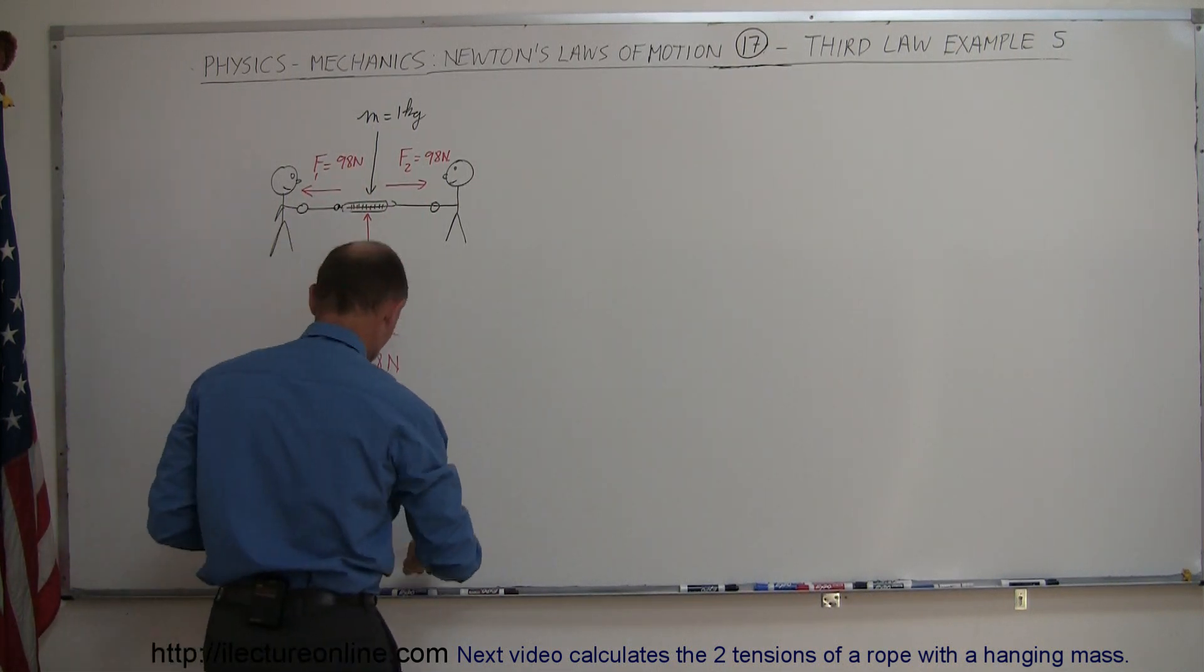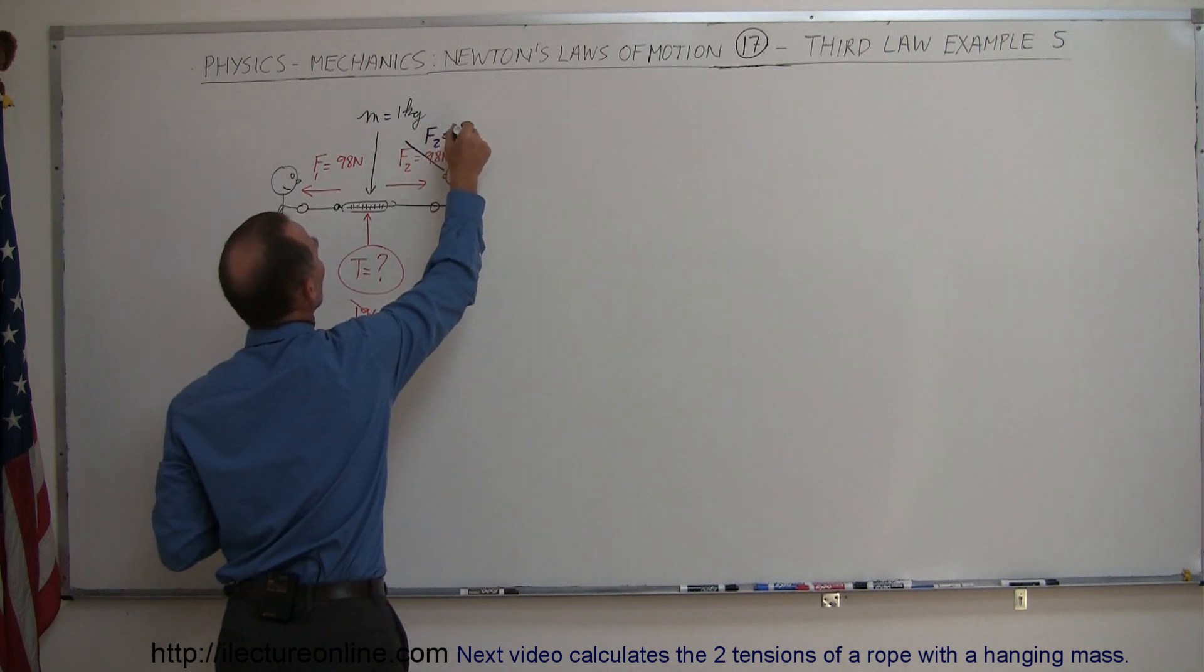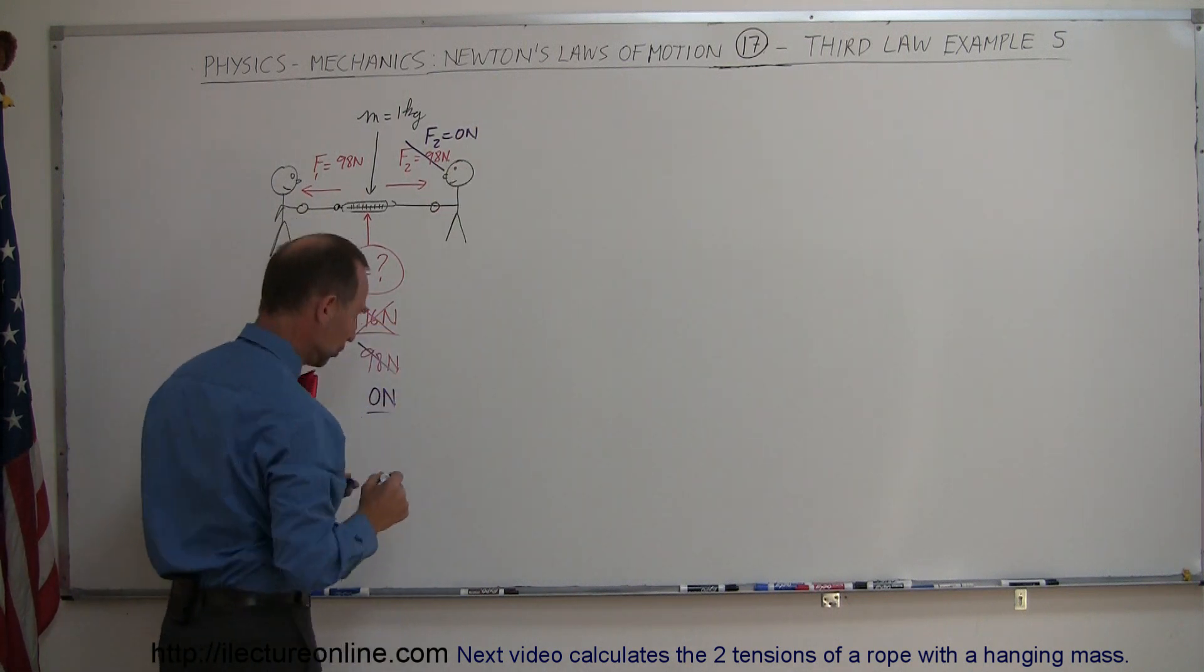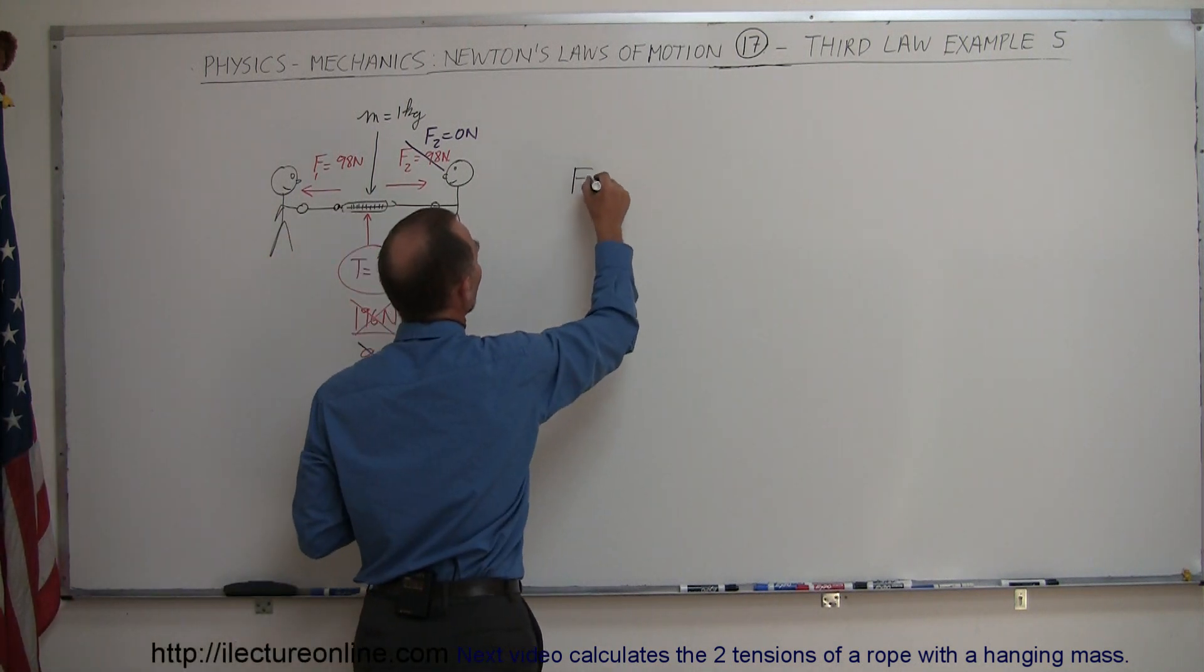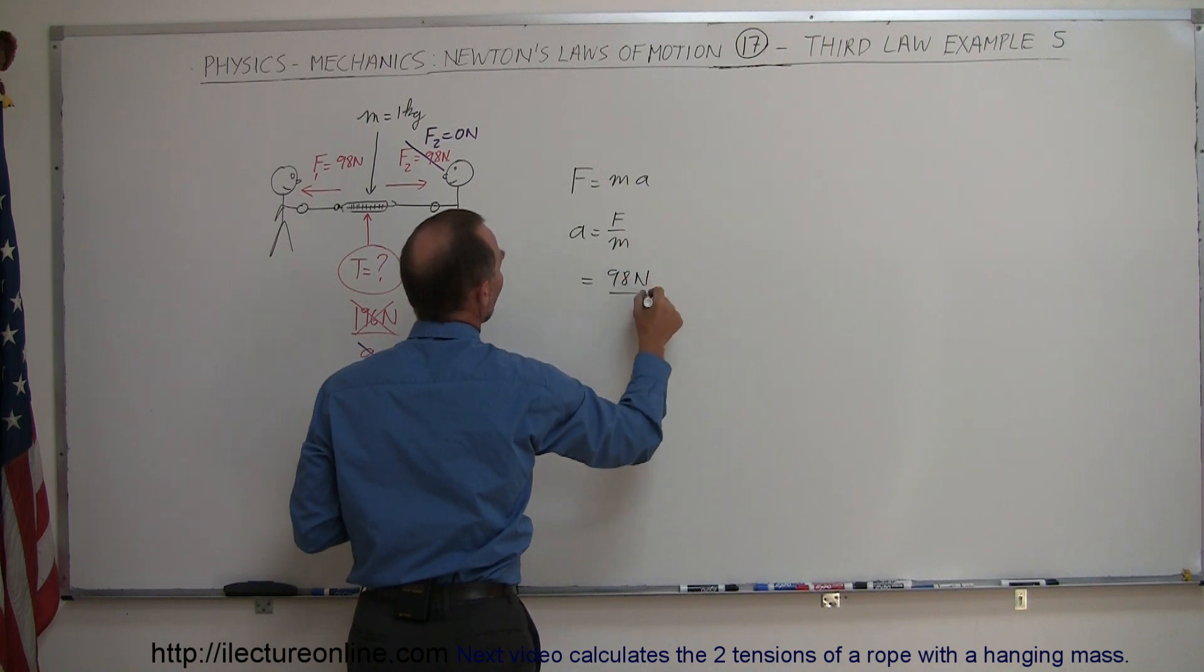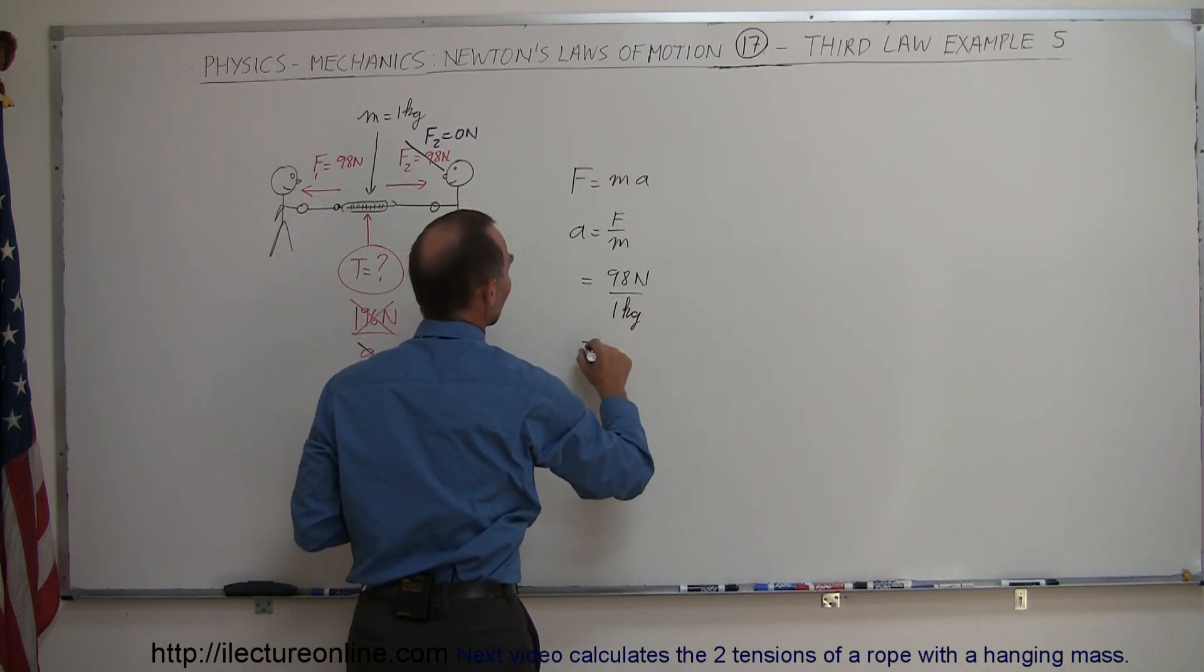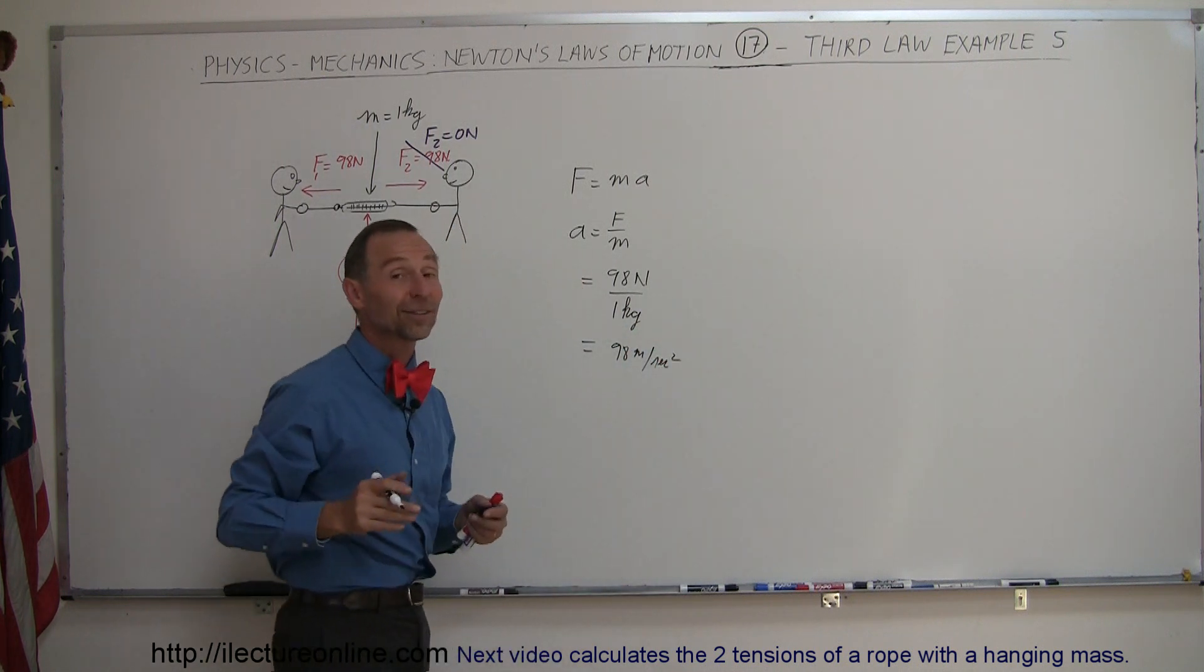So in the case, and let me use a different color, in the case if this is now F2 equal to 0 Newtons then this would simply go down to 0 Newtons. And using Newton's second law, we know that F equals MA and therefore A equals F divided by M. And if this person wasn't pulling back and we have a force of 98 Newtons and the mass of the object, the scale was one kilogram, then we'd say that the acceleration would be 98 meters per second squared. By the way that would be quite an acceleration.